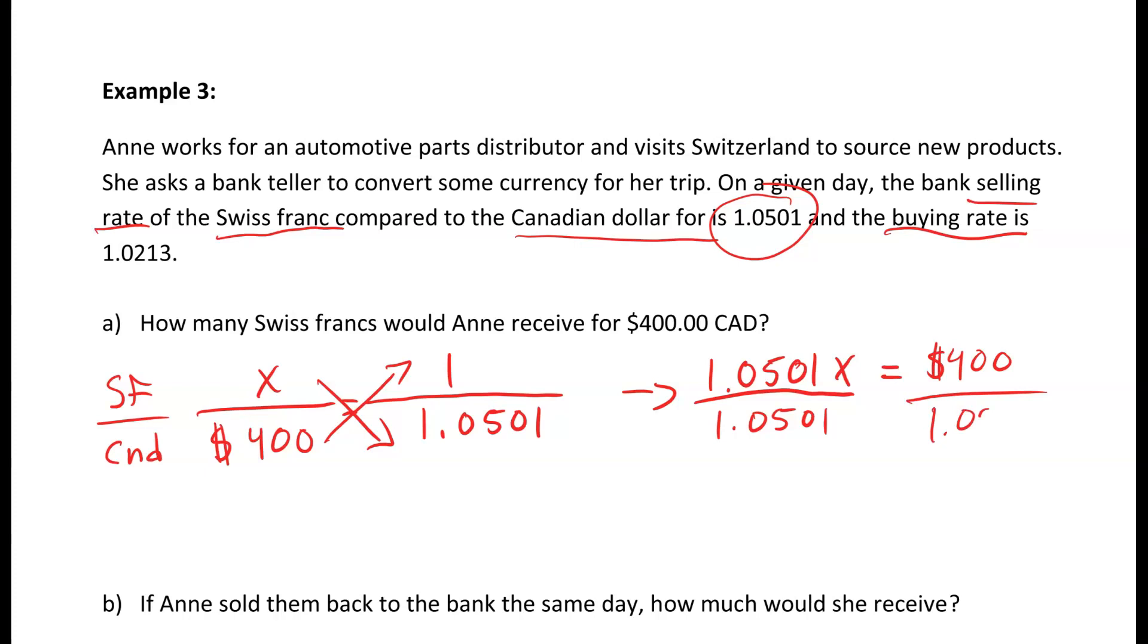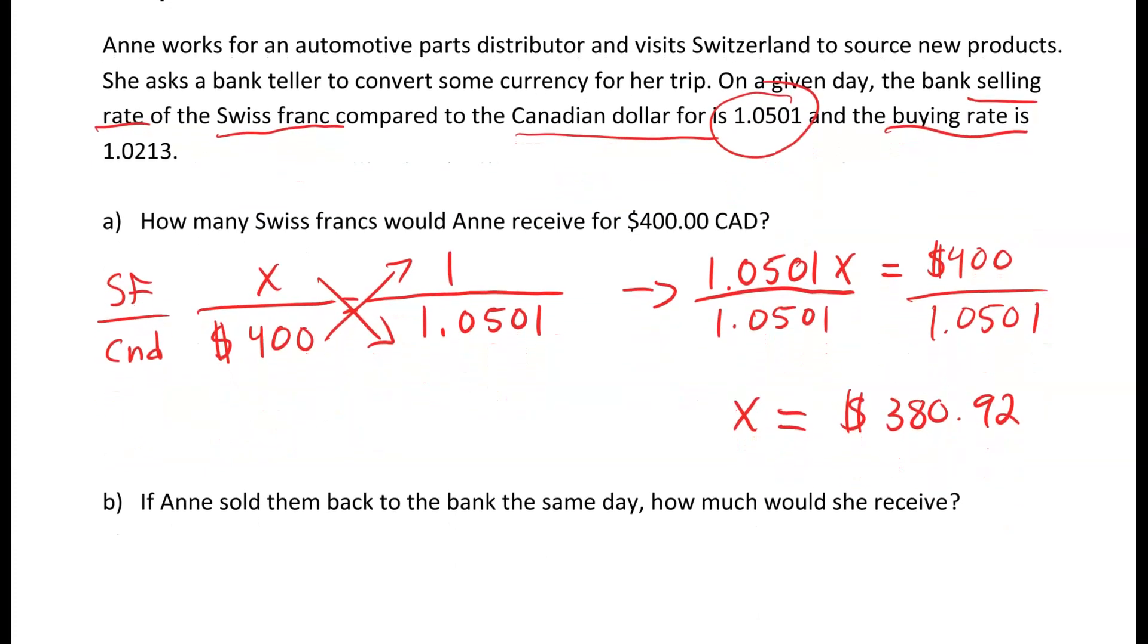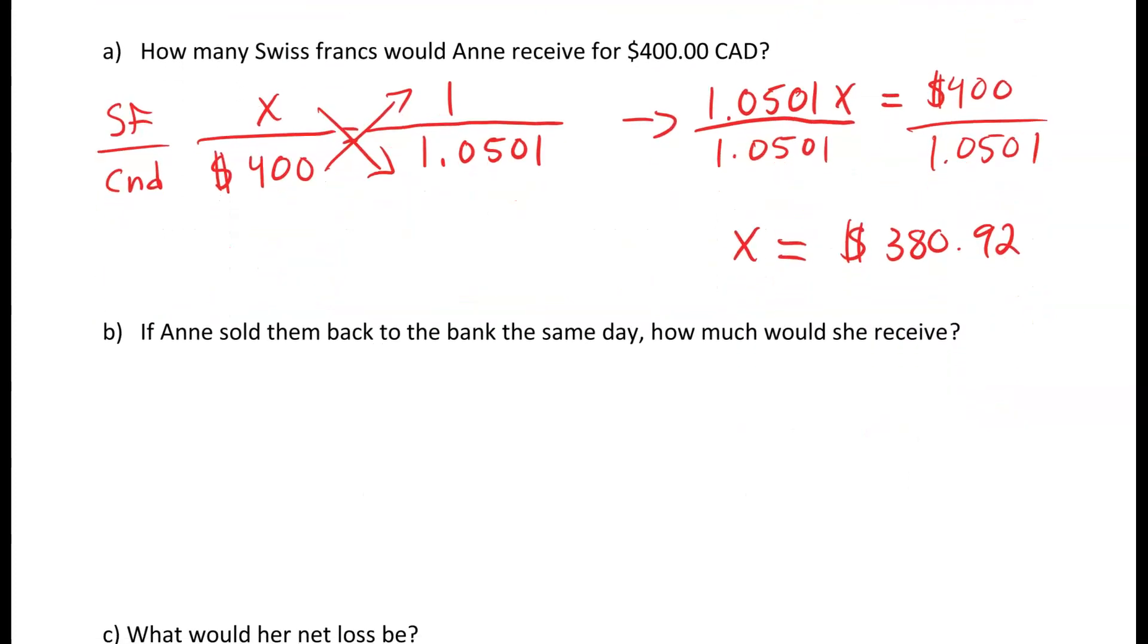We get x by itself equals 380.92 Swiss francs. So we took our 400 Canadian and we got 380.92 Swiss francs.